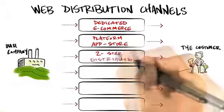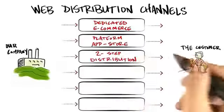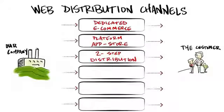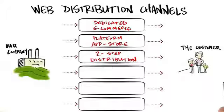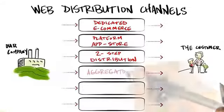Another choice is to use two-step distribution. That is, there might be other distributors who have major web presences — Amazon, Walmart, other local and regional stores — and you might actually sell your virtual or physical products through theirs.